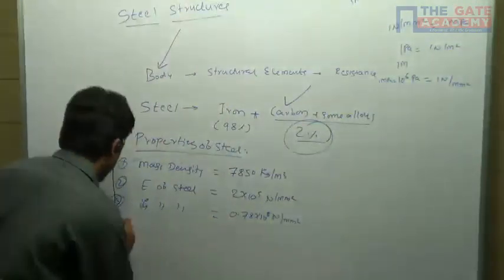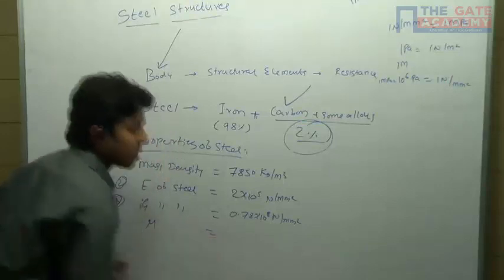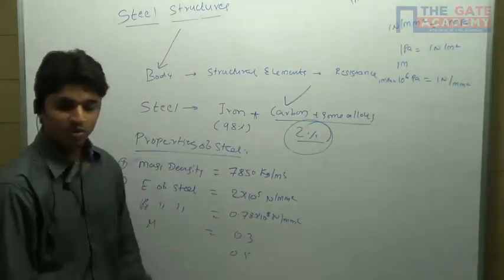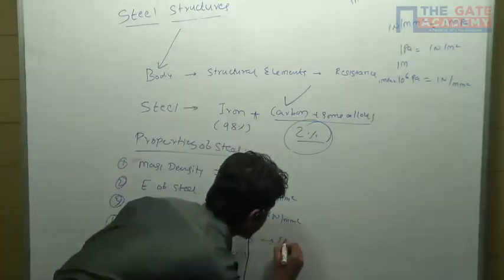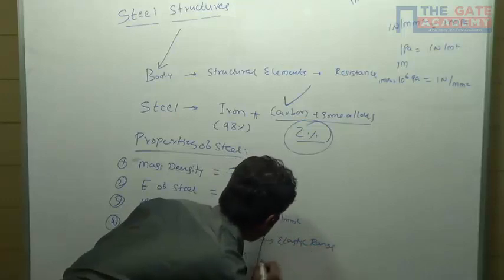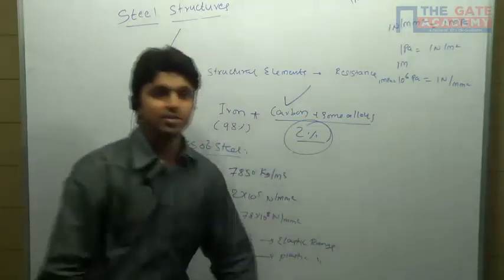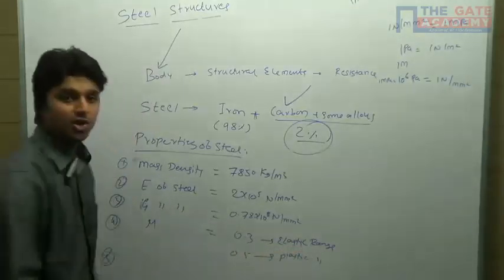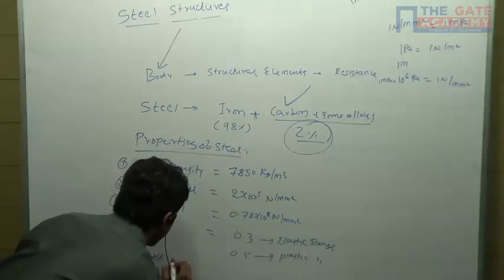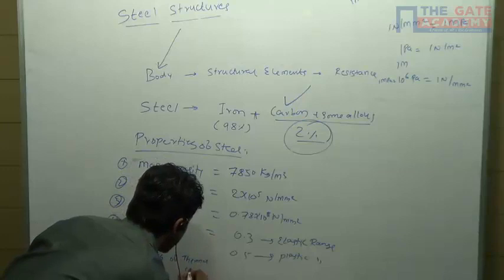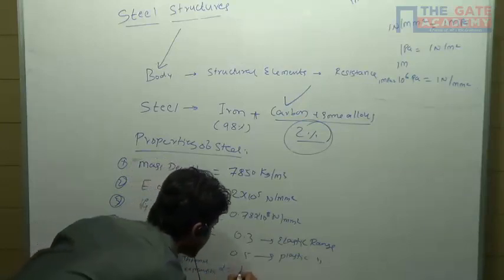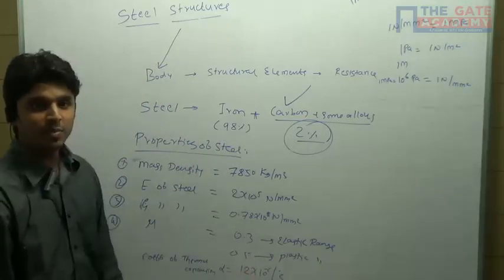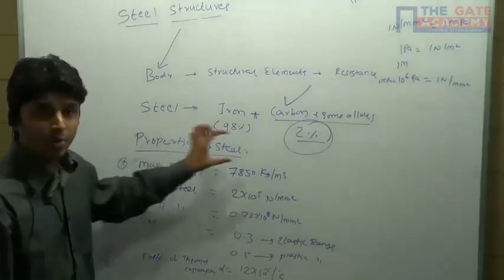So the modulus of rigidity of the steel is 0.78 into 10 raised to 5. The fourth property is Poisson's ratio, which varies from 0.3 to 0.5. 0.3 is in the elastic range and 0.5 is in the plastic range. Next is the coefficient of thermal expansion, alpha, which is equal to 12 into 10 raised to minus 6 per degree centigrade.